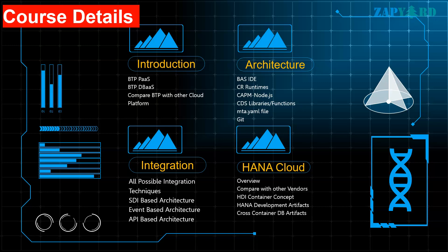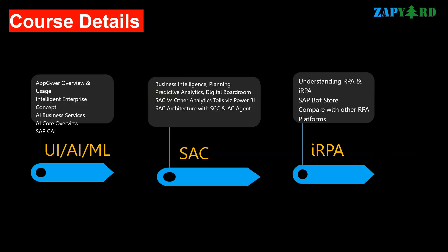SAP HANA Cloud will also get some limelight — we will compare other cloud vendors, the pros and cons, understand SDI container concepts and schema, and cover HANA development artifacts and cross-container database artifacts. AppGyver is the boon for no-code, low-code app development, and we will go through it and implement some use cases. We will learn how BTP supports AI and machine learning. For analytics, we will do predictive analytics, walk through the digital boardroom, and compare SAP Analytics Cloud with tools like Power BI. Finally, we will understand RPA and IRPA, and explore the SAP Bot Store.